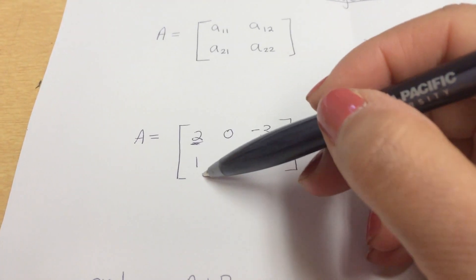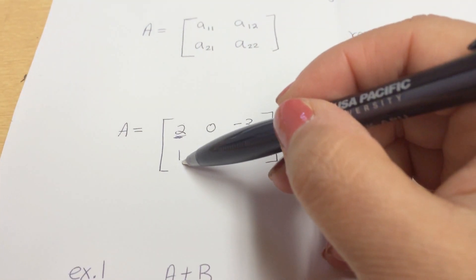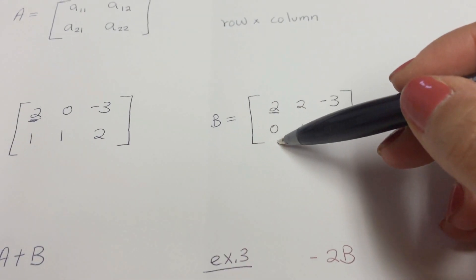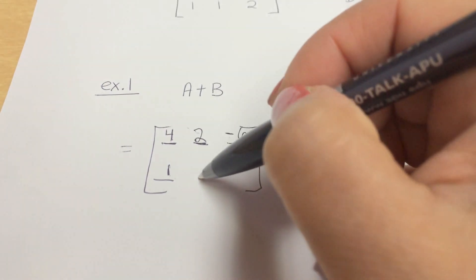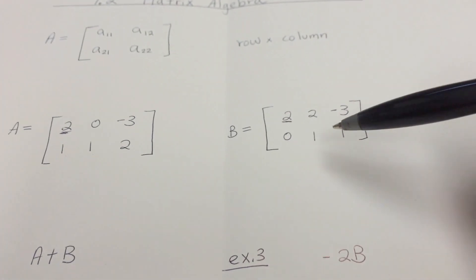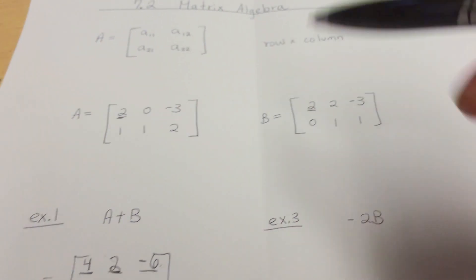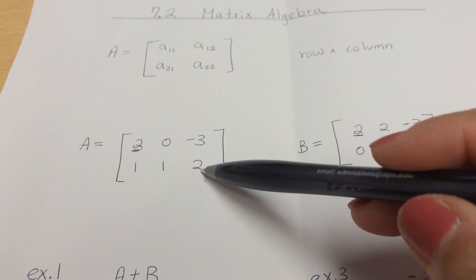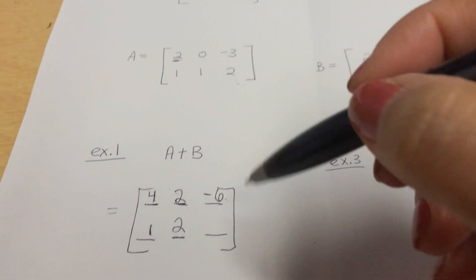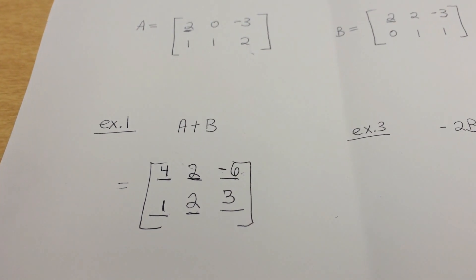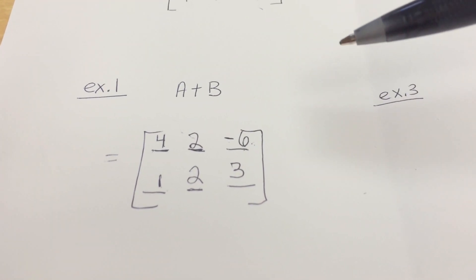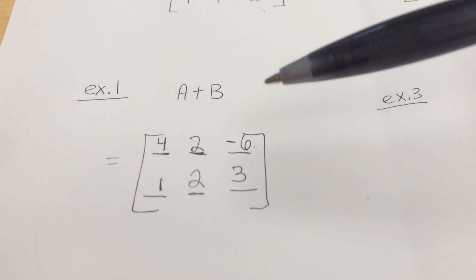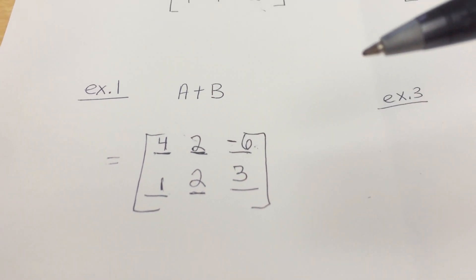Moving to the second row: second row, first column gives one plus zero equals one. Second row, second column gives two, and second row, third column gives three. That's the final answer for example one. Position is being emphasized here because when we get to the product rule, it can get confusing, so understanding these positions will help.